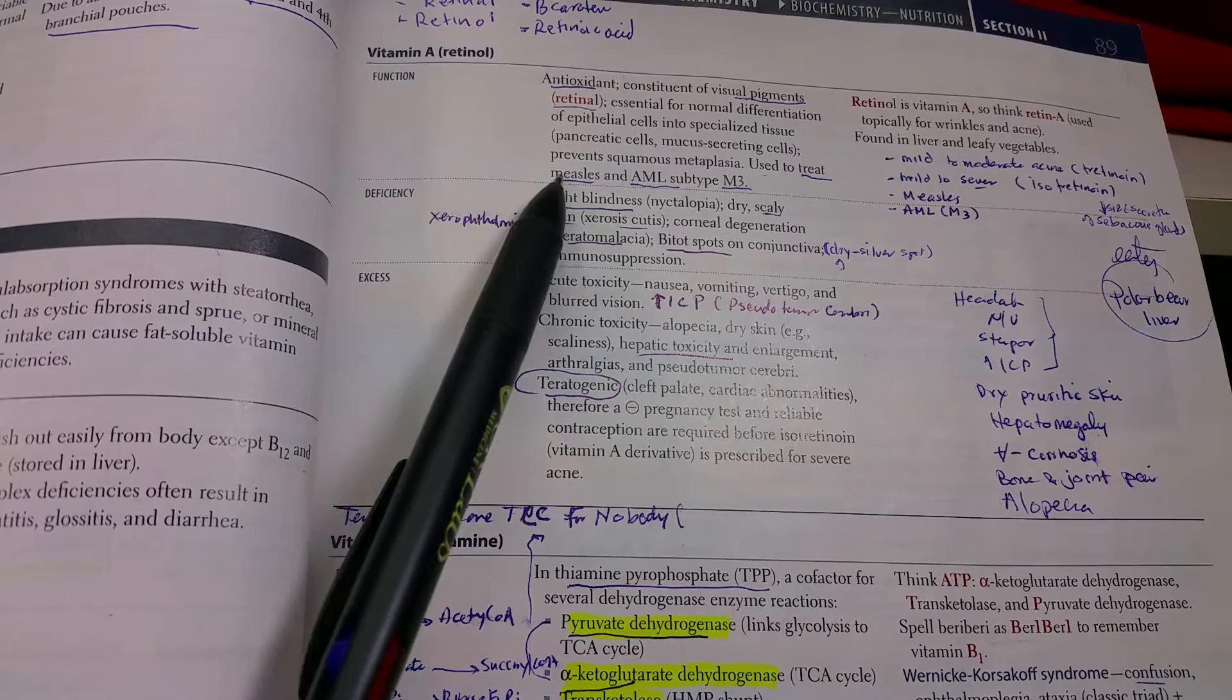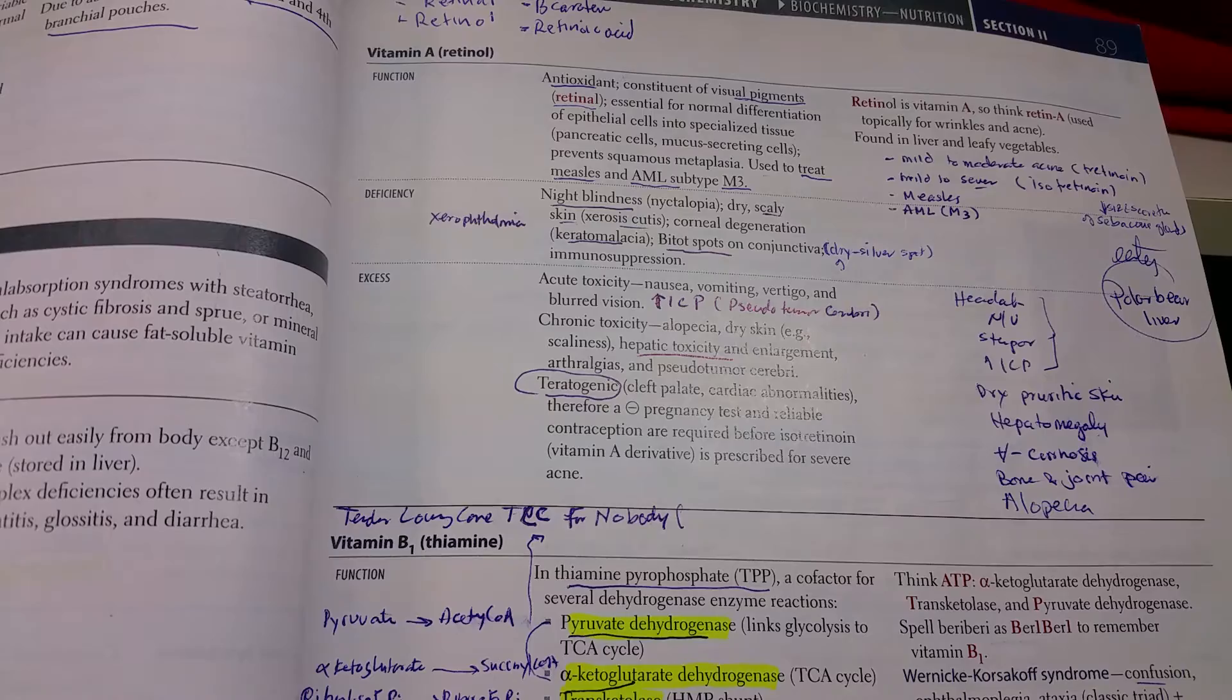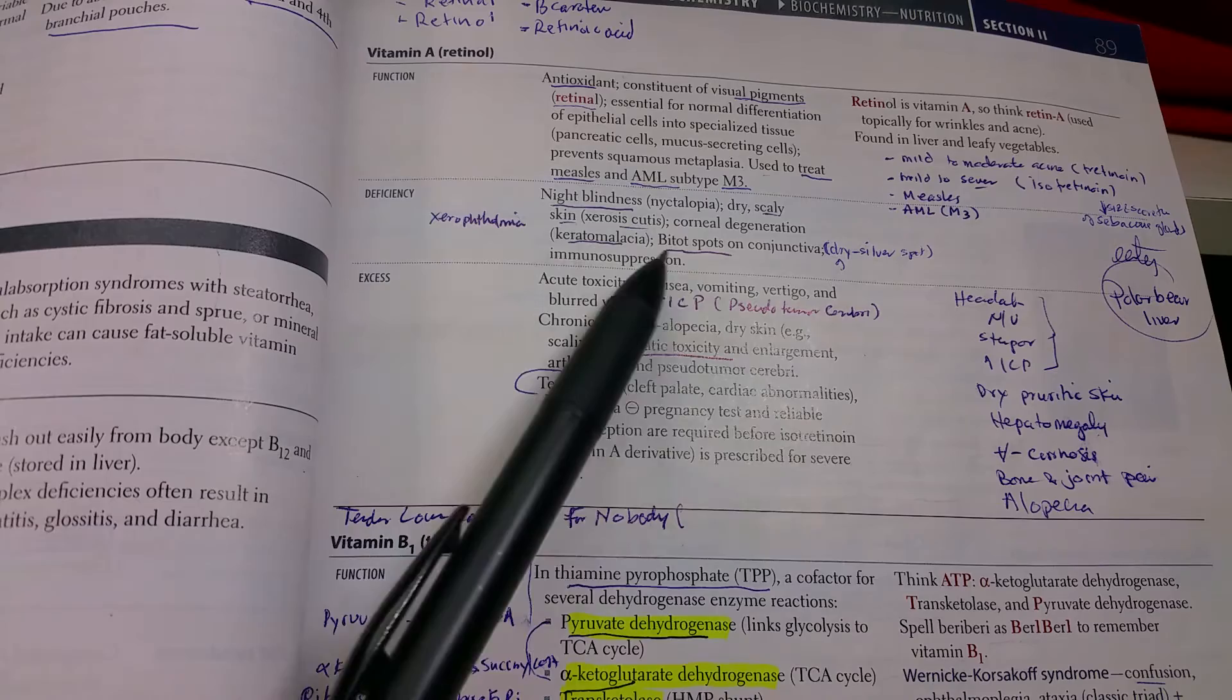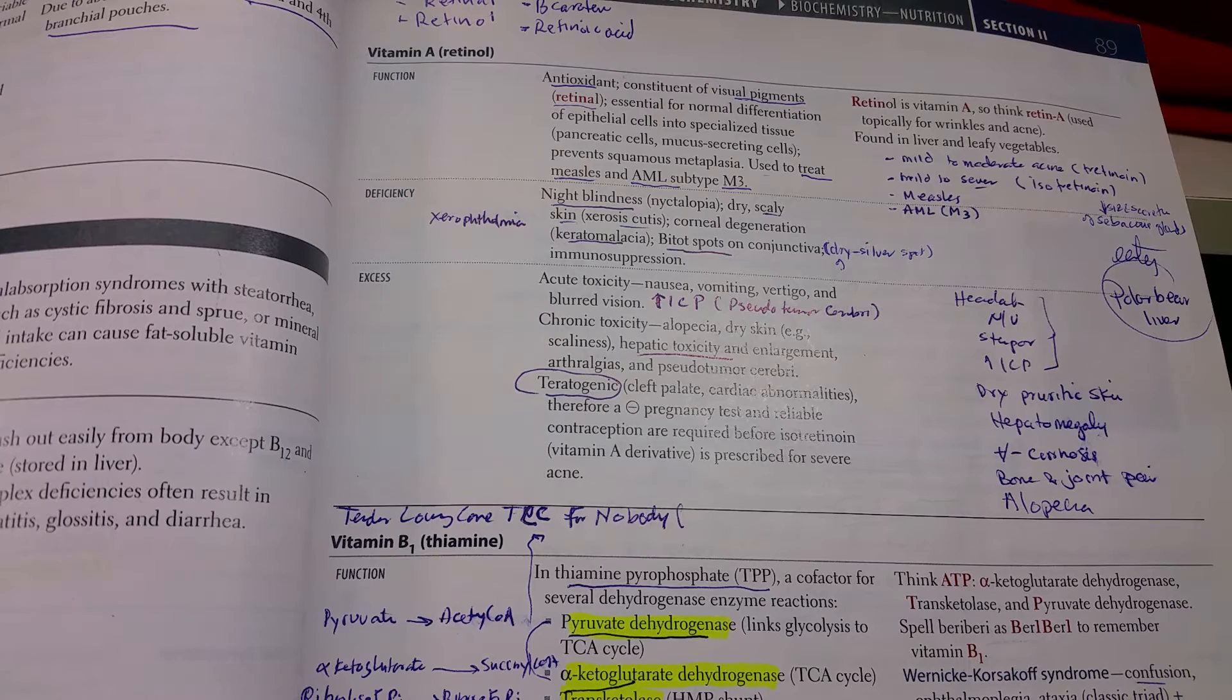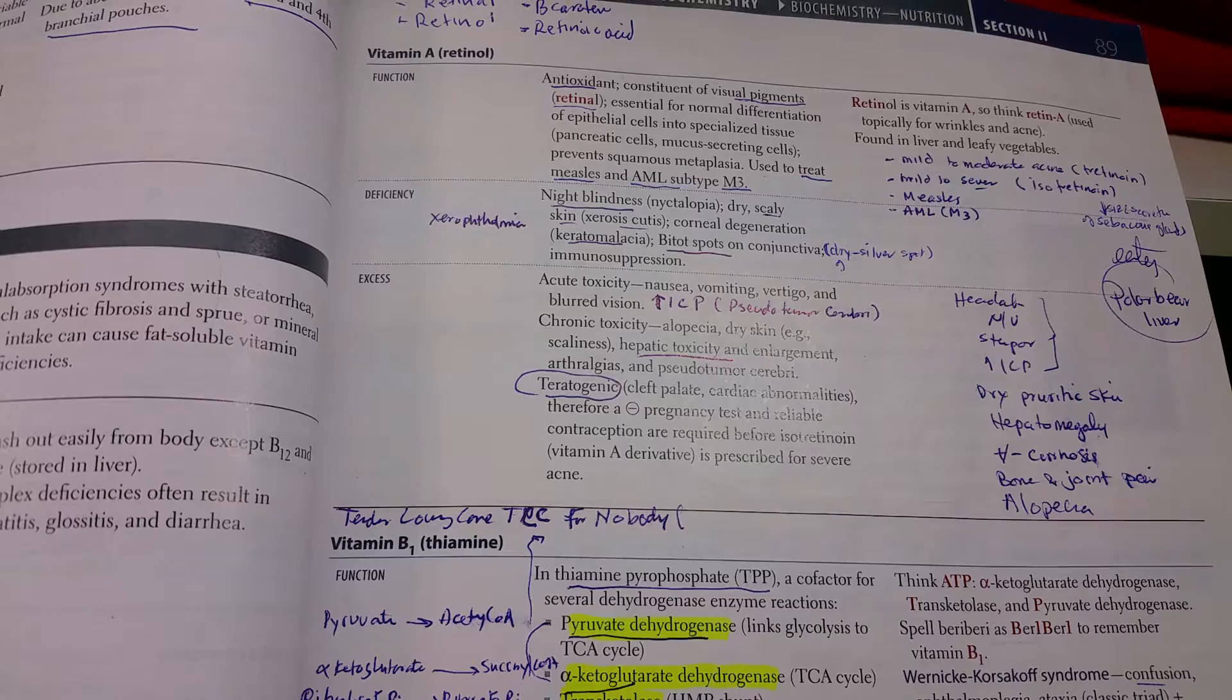It might be used for the treatment of measles and for the M3 type of AML. It's very important for the eye, so deficiency causes night blindness. It's important for the skin, causing dry scaly skin and corneal degeneration, and something called Bitot spots, which are dry silver spots on the bulbar conjunctiva.